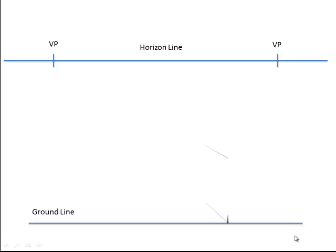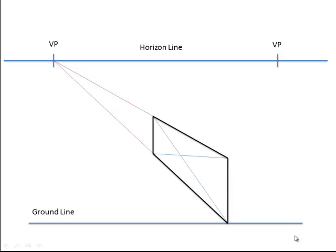First of all we are going to construct a simple rectangle and vanish it back to a vanishing point. Then we are going to cross the two diagonals. This gives us the centre of our rectangle.